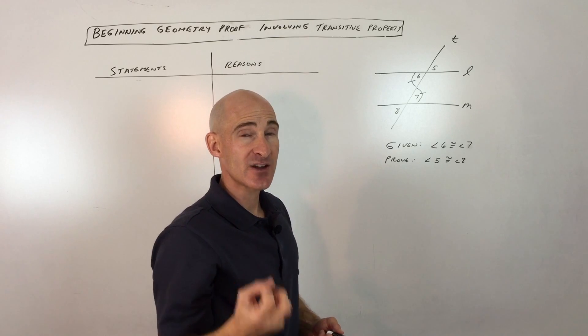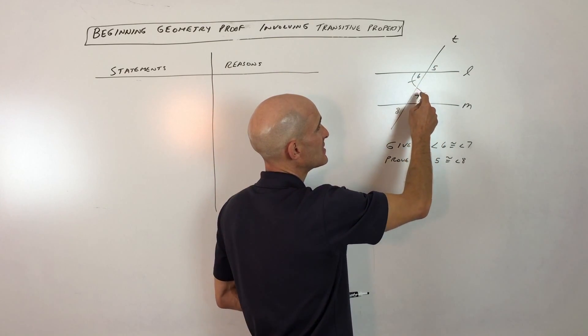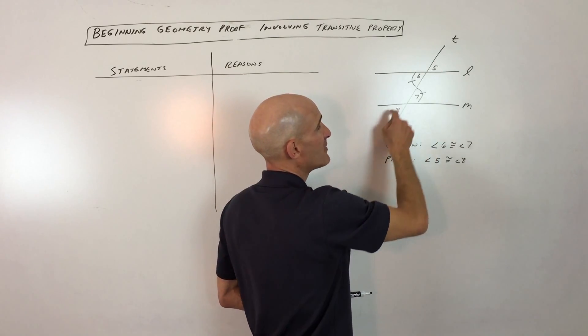So now what we can see, it's starting to come together for us. We can see that 5 is equal to 6, 6 is equal to 7, 7 is equal to 8. Why would 5 be equal to 8?